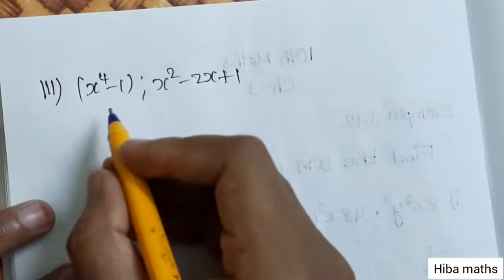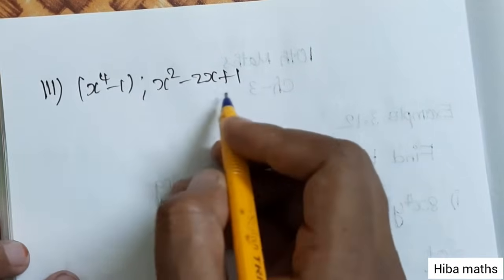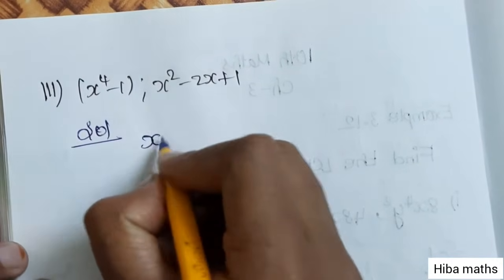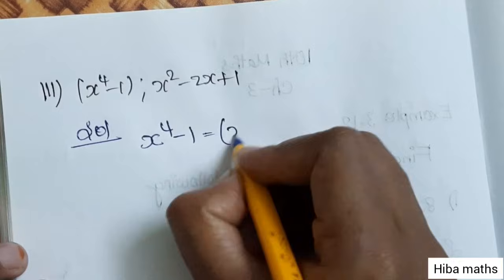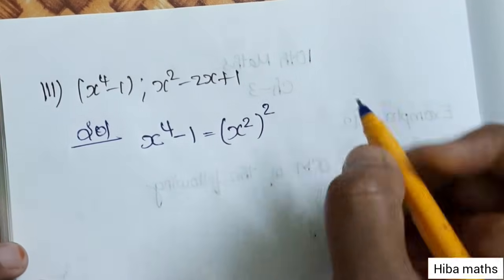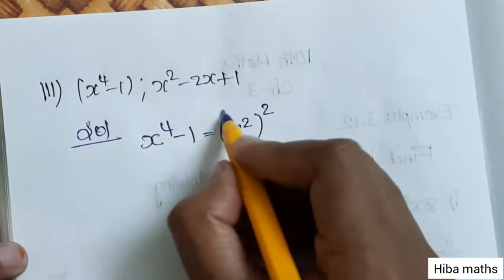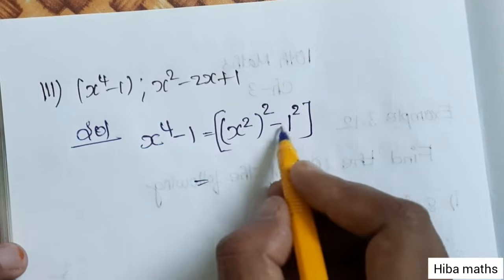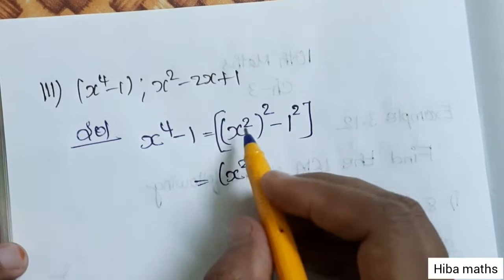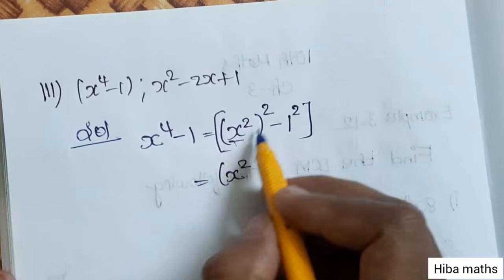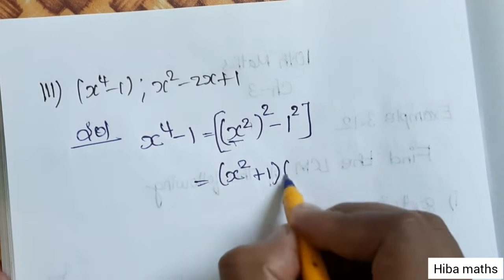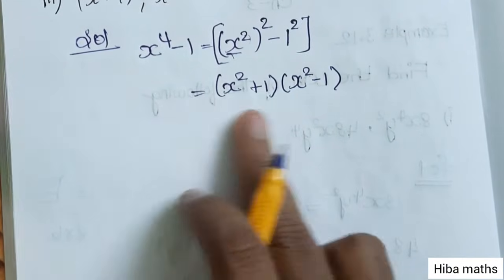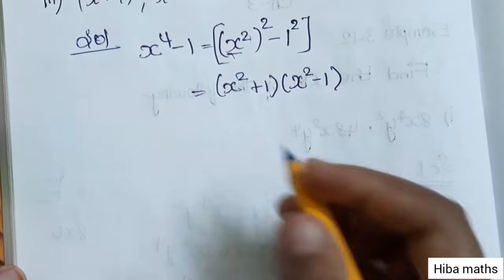Third subdivision: x⁴ minus 1 and x² minus 2x plus 1. For x⁴ minus 1, we write it as (x²)² minus 1², since x to power 4 is (x²)². Using the a² minus b² formula as (a+b)(a-b), we get (x²+1)(x²-1). x²+1 is one term and x²-1 is another term.